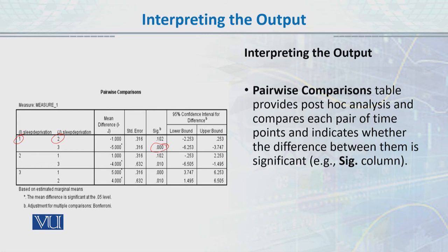In 24 hours and 36 hours, the error rate is not significant. But in 1 and 3 - 24 hours and 48 hours sleep deprivation - the error rate is significant. Two and one is not significant, but two and three, the difference is significant. Where the p-value is less than 0.05, that means your results are significant.